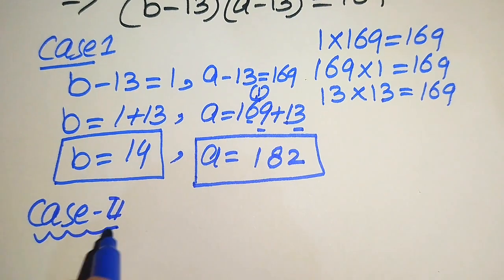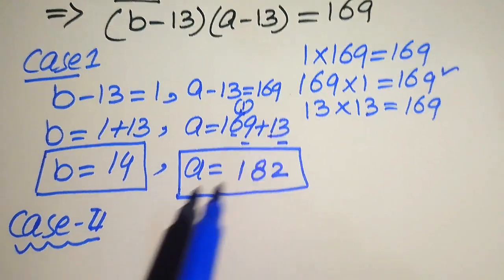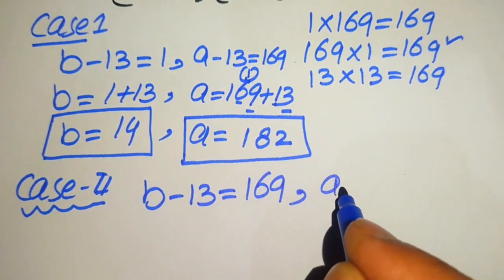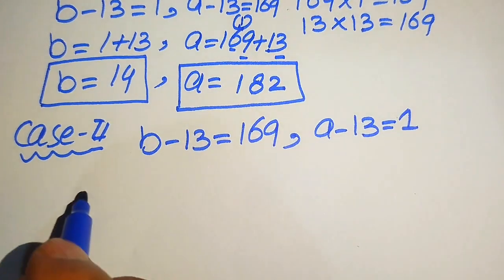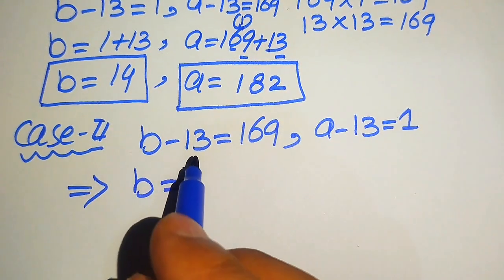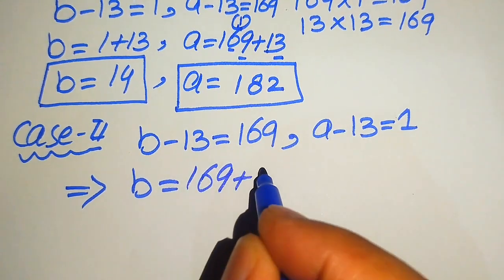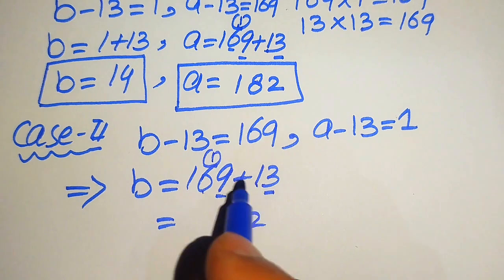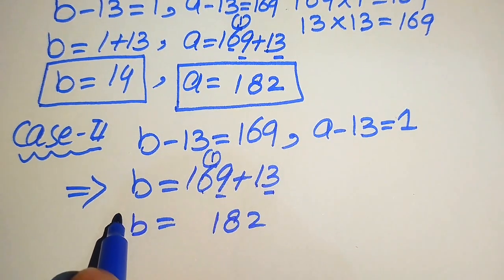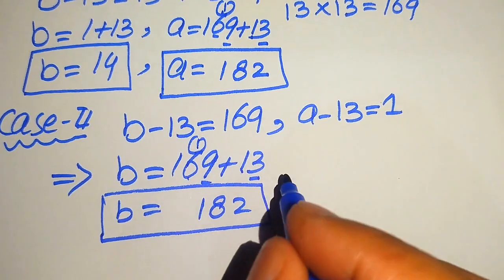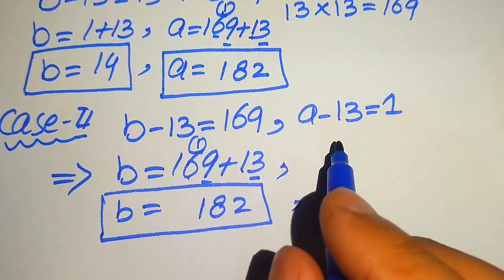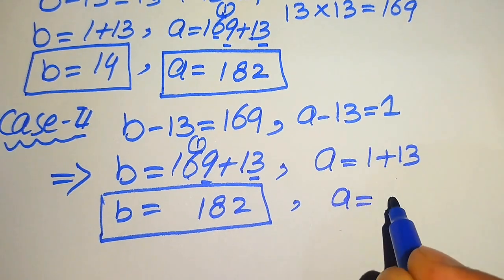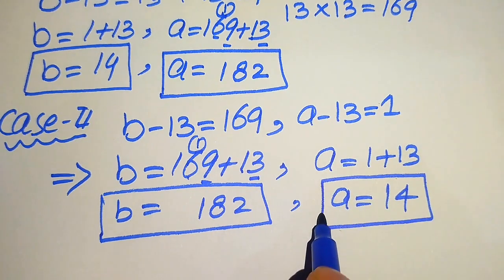In Case 2, we swap the factors: b minus 13 equals 169 and a minus 13 equals 1. From the first, b equals 169 plus 13, so b equals 182. From the second, a equals 1 plus 13, so a equals 14. These are the values of a and b from Case 2.